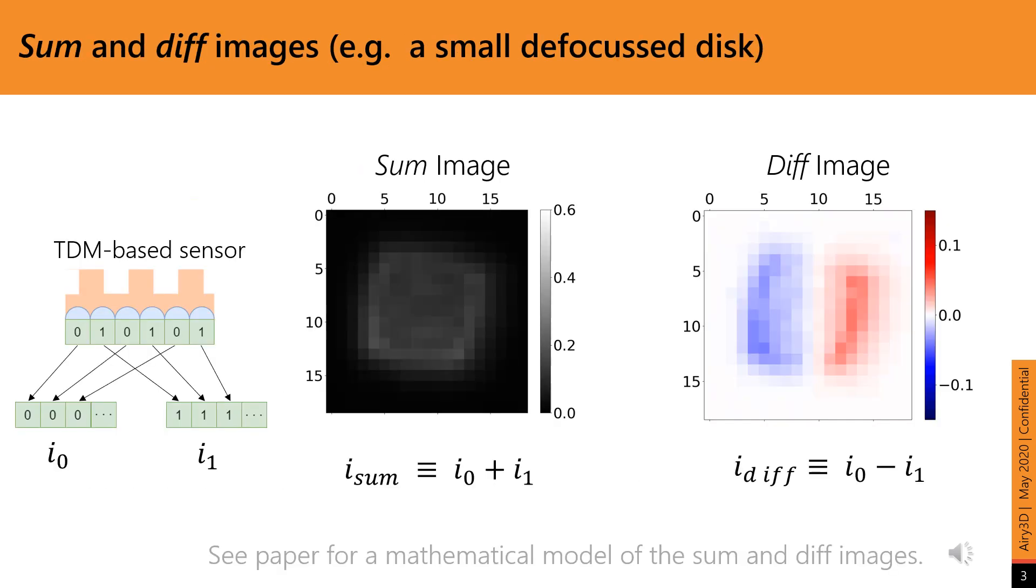The TDM produces two characteristic responses: the sum response and the diff response. Each TDM pixel pair produces one sum and one diff response. The sum response is obtained by adding the responses of the 2 pixels under a single period of the TDM, while the diff response is their difference.